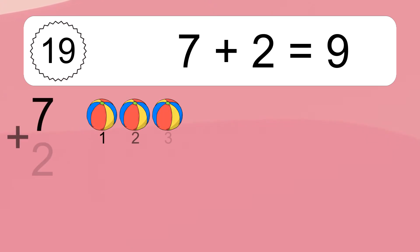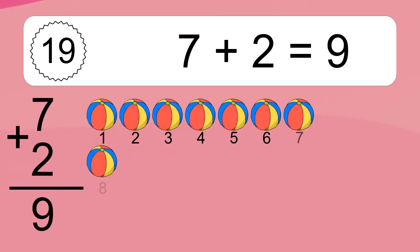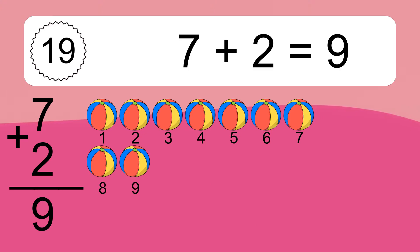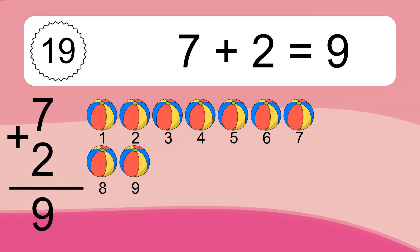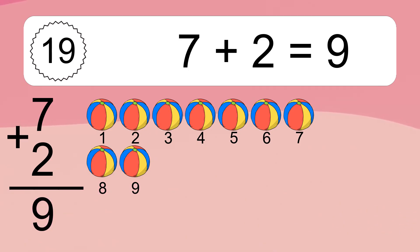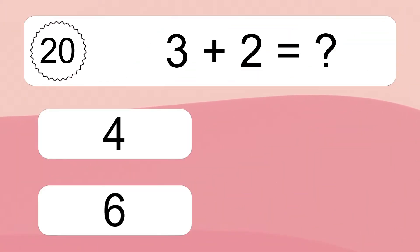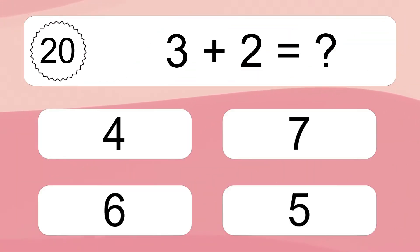7 plus 2 equals 9. Let's count it: 1, 2, 3, 4, 5, 6, 7, 8, 9. 3 plus 2 equals what?